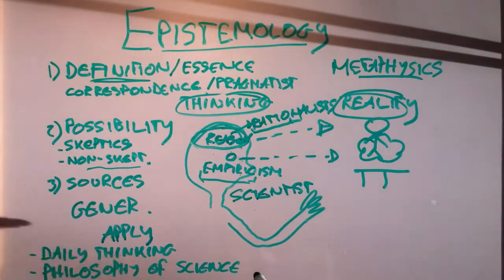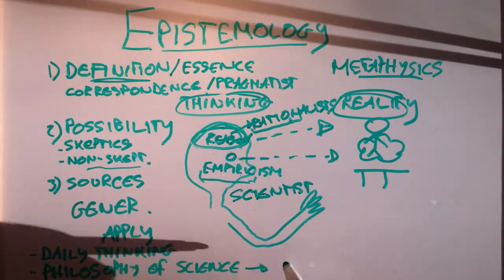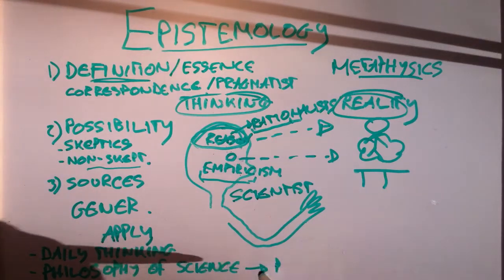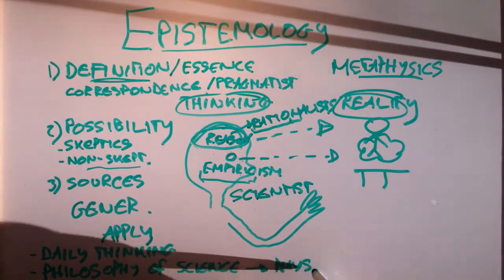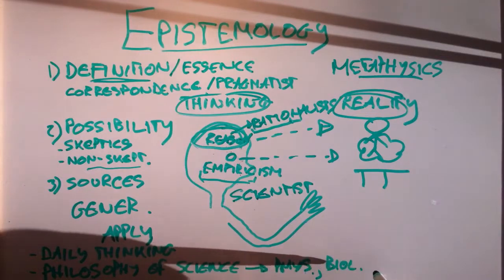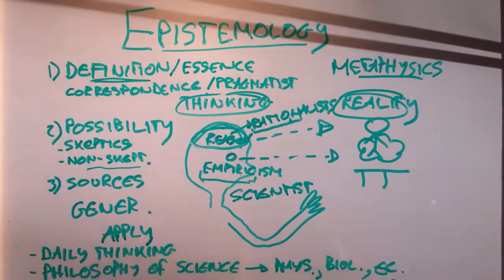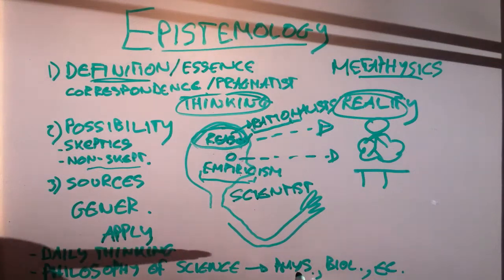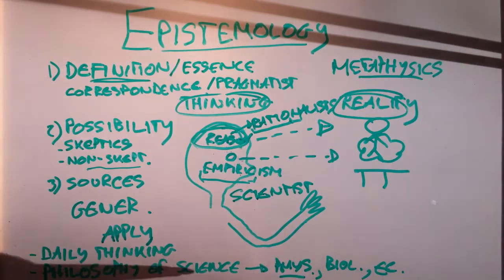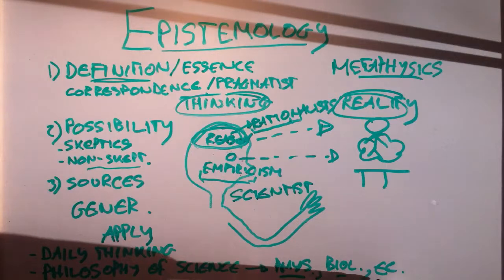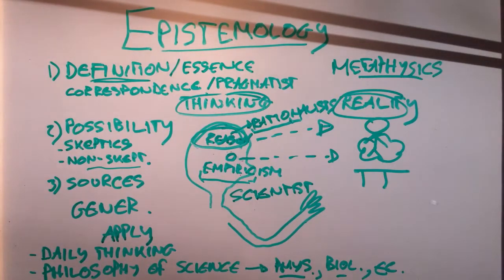And science here can mean a bunch of things. We have physics, philosophy of physics, philosophy of biology, philosophy of economics. Every scientific discipline can be studied by philosophers. And a lot of them are, in fact, studied by philosophers. Traditionally, philosophy of science was mainly philosophy of physics. But now, biology and economics are really getting important as well.